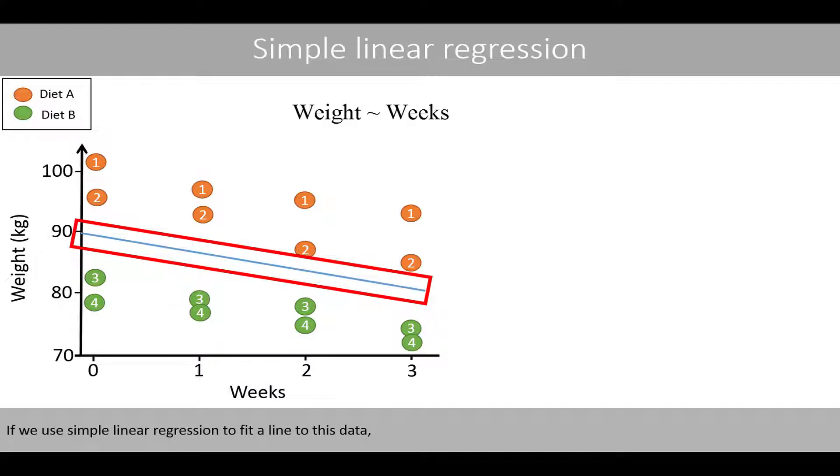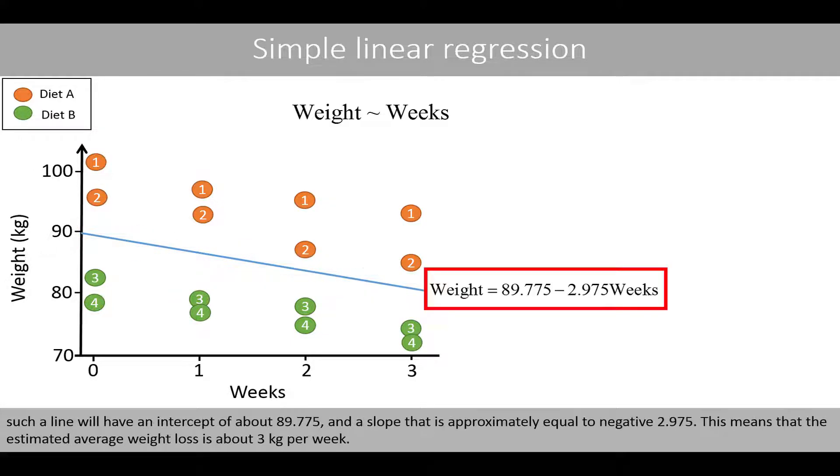If we use simple linear regression to fit the line to this data, such a line will have an intercept of about 89.775 and a slope that is approximately equal to negative 2.975. This means that the estimated average weight loss is about three kilos per week.